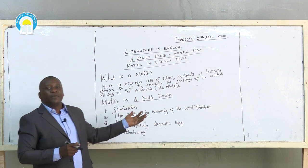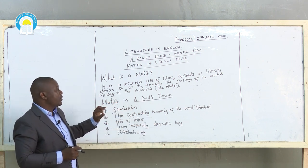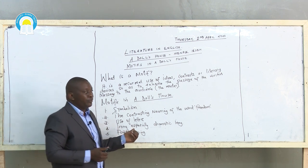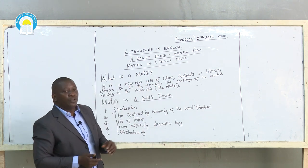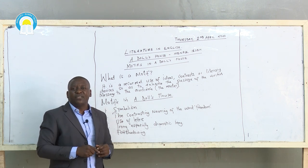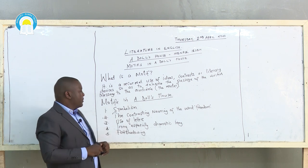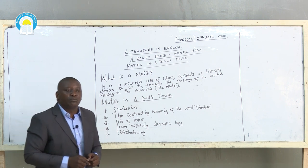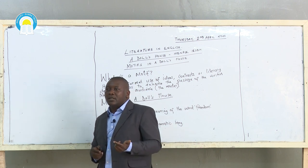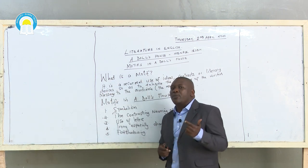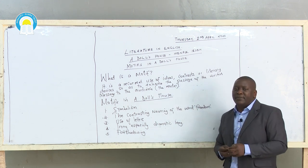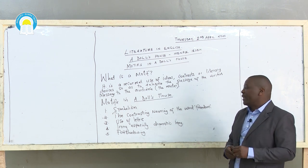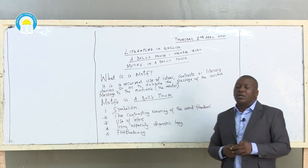So these are the motifs that we have to put a lot of interest in. One, we look at symbolism. Two, we look at the contrasting use of the word freedom. Three, we have the use of letters. Number four, we have irony — and specifically we are interested in dramatic irony. We understand we have different types of irony: situational, verbal, and dramatic irony. And lastly, there is foreshadowing.